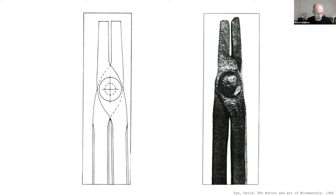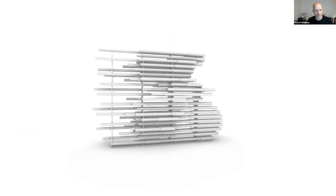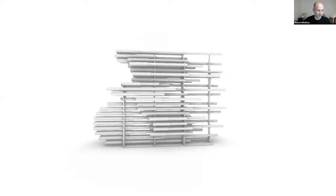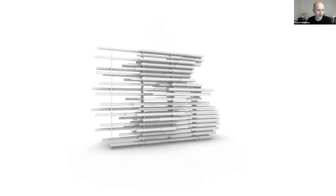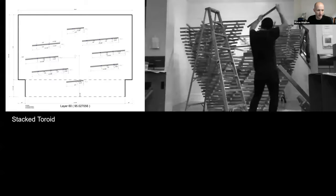The projects I've been doing have started off really small and slowly evolved into things that are slightly larger. I'm just going to show a few quickly here at the beginning. This is the Oregon Environmental Council's bike bill that we did about a year and a half ago with some students at school. This whole thing used Grasshopper to scan a person on a bike and translate that into a series of pipes that register essentially a figure riding a bicycle. This thing was built and put over on campus.